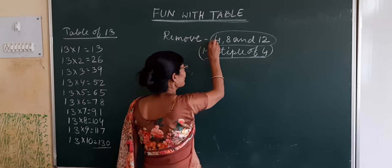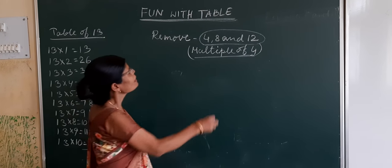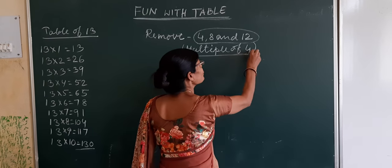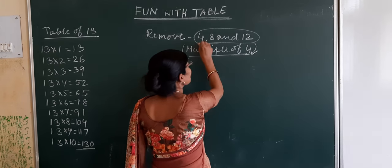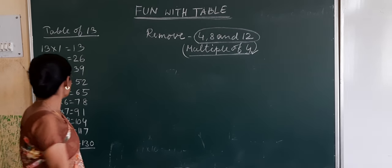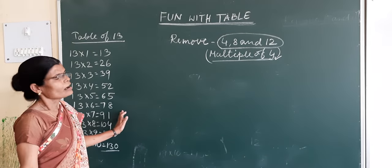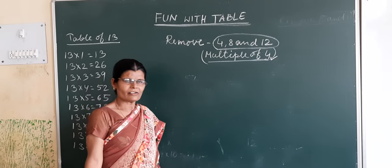That's why students, please memorize this. For the table of 13, we should remove the multiples of 4. If you will memorize this one, you can write or learn the table of 13. Okay, thank you and have a nice day.